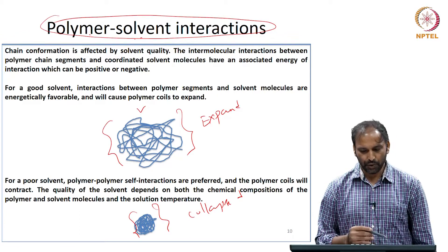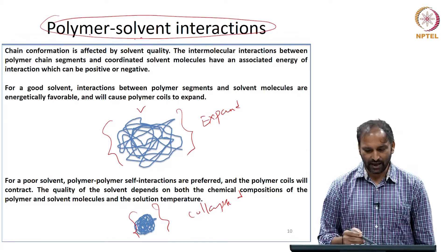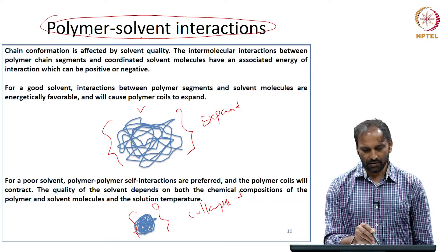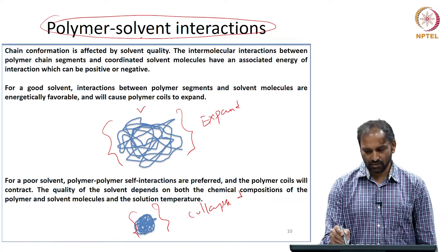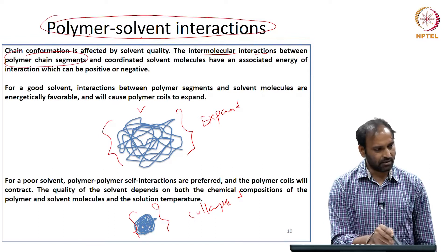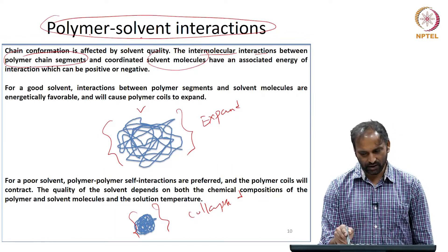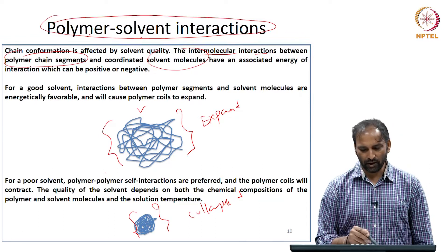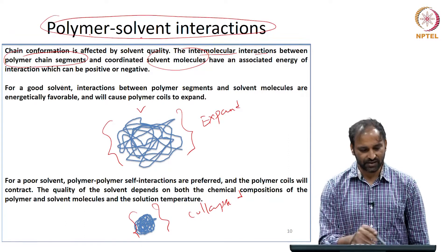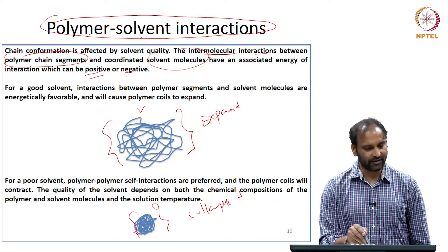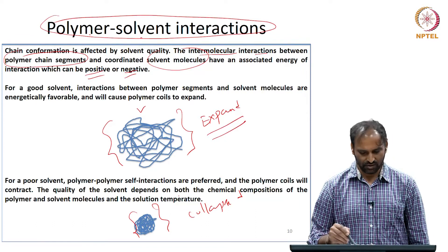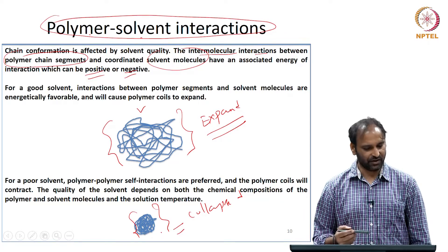In a crude sense, if the intermolecular interaction between the polymer chain and the solvent — depending upon whether the energy associated with this interaction is either positive or negative — the polymer will either take the expanded configuration or it will take the collapsed configuration.